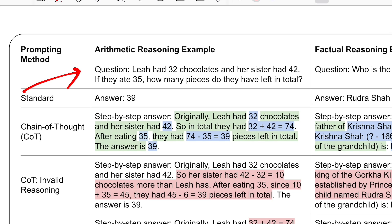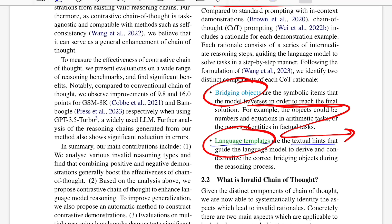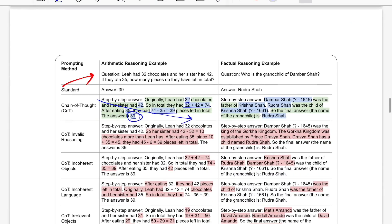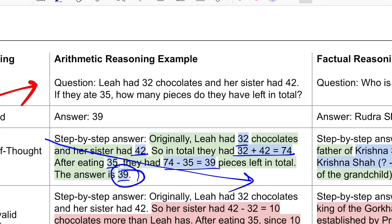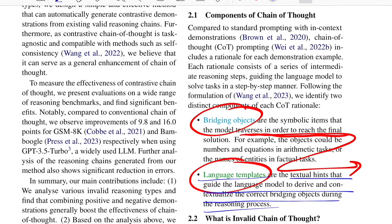If the example you're trying to solve for is this one - Lee had 32 chocolates and her sister had 42, if they ate 35, how many pieces do they have left in total? Whatever you see in blue is basically the bridging objects, where you have certain values that you need to use as you progress from top left to bottom right to get to your final answer, which is 39. The second aspect is language templates, which are textual hints that guide the language model to derive and contextualize the correct bridging objects during the reasoning process. Those are the language marked in green that fills in the surrounding context around these blue objects so the bridging objects are contextualized. For example, 'after eating 35' - the model would understand it's a negative sign along with the bridging object of 35 because 'after eating' is a negative connotation. Those are the two components that the authors have broken chain of thought into.